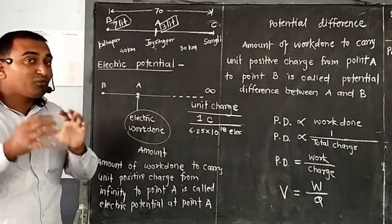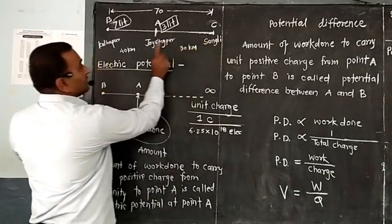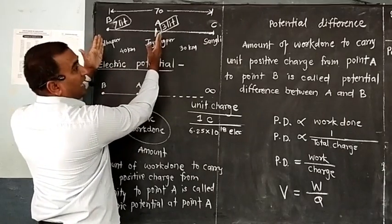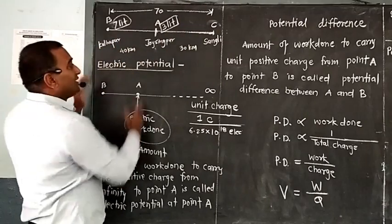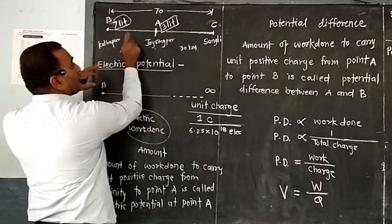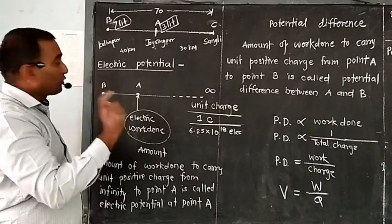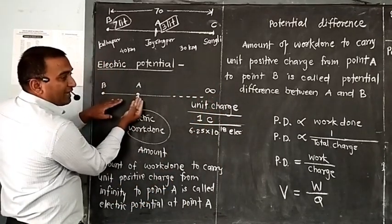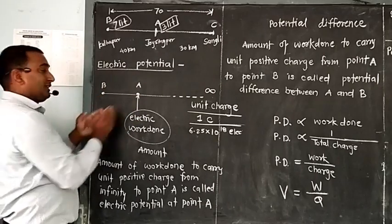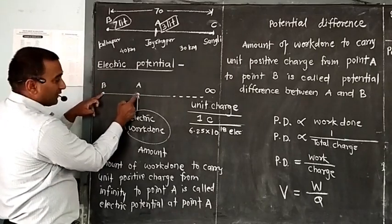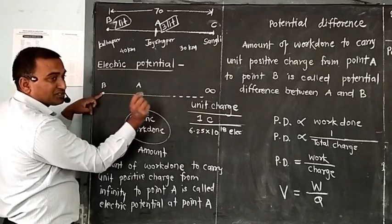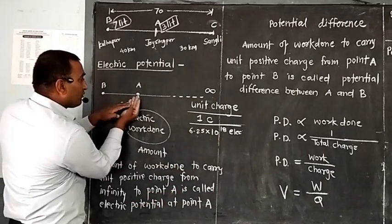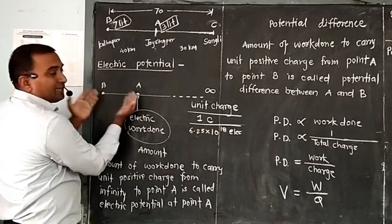We have discussed electric potential. But what is potential difference? Sangli to Jaisingpur is 3 litres, Sangli to Kolhapur is 7 litres. Then, what is the difference if I want to carry the vehicle only from Jaisingpur to Kolhapur, not from infinity? That difference is 7 litres minus 3 litres, which is 4 litres. So, 4 litres is the petrol potential difference between these two points. Like this, we should not carry all the charge from infinity now — only carry the charge from point A to point B, and there is some work done. The amount of work done to carry unit positive charge from point A to point B is called potential difference between A and B.